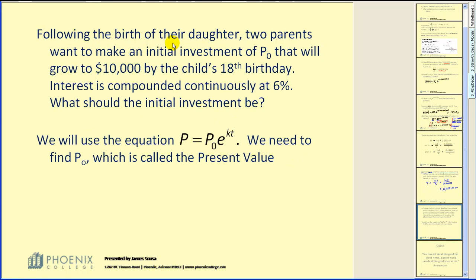One last example. Following the birth of their daughter, two parents want to make an initial investment of P₀ that will grow to $10,000 by the child's 18th birthday. Interest is compounded continuously at 6%. What should the initial investment be?